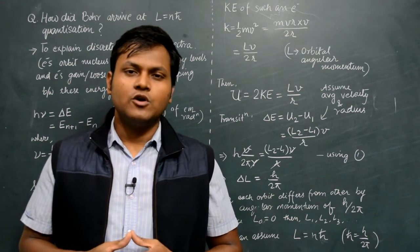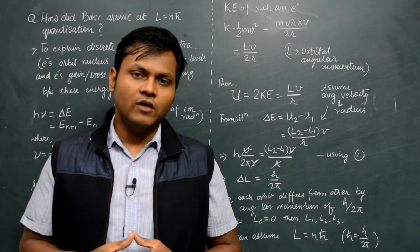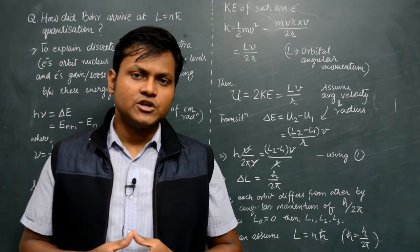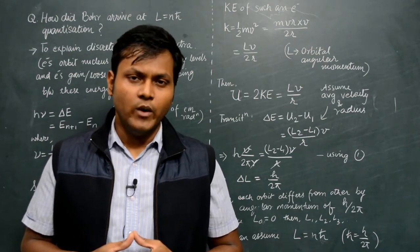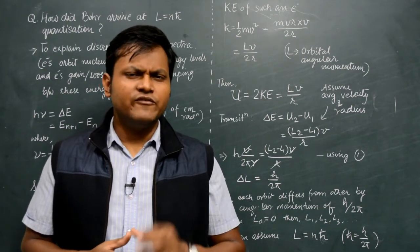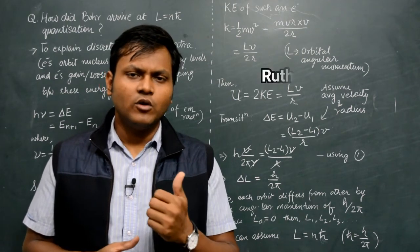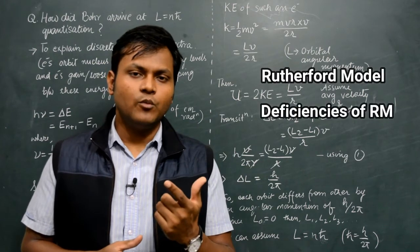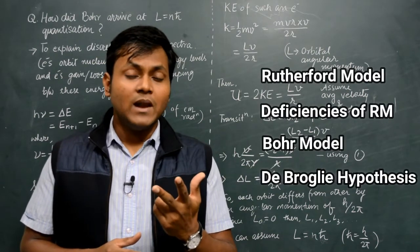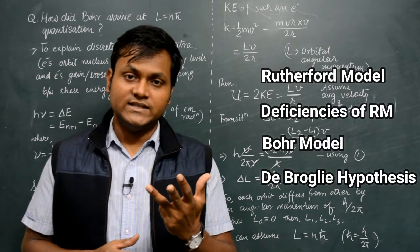In today's video I want to talk about a very interesting aspect about the Bohr model of the atom, which is basically the quantization of electron wave. To do that, first I want to spend a very small time discussing the Rutherford model, the deficiencies in the Rutherford model, the Bohr model, and when we apply de Broglie's hypothesis how we end up getting the quantization.